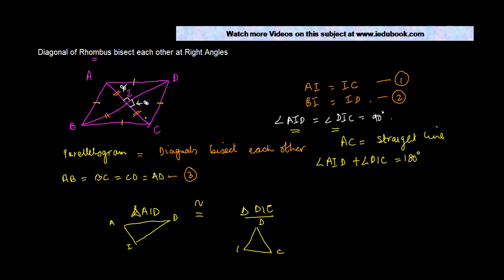This being a straight line, this angle has to be 180 degree. If somehow we can prove that these two angles are equal to 90 degree, or these two angles are equal, then we can just apply this rule to say both of them are 90 degree.